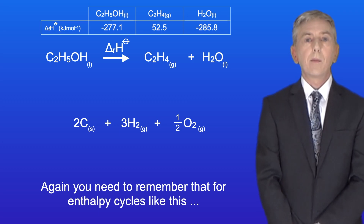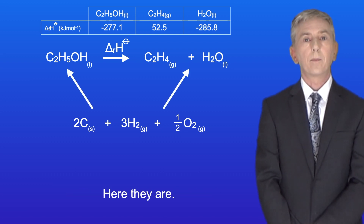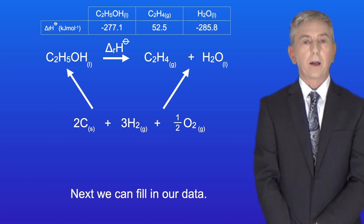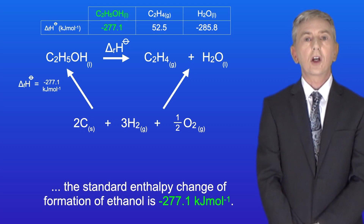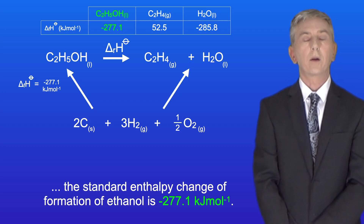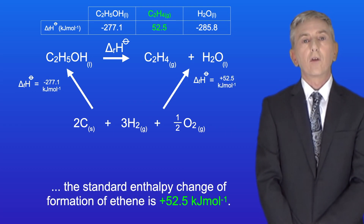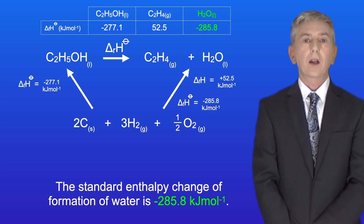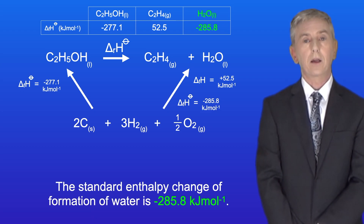Again, you need to remember that for enthalpy cycles like this, when we use standard enthalpy change of formation data, the arrows point upwards, and here they are. Next we can fill in our data. Looking at the left-hand arrow, the standard enthalpy change of formation of ethanol is minus 277.1 kJ per mole. Looking at the right-hand arrow, the standard enthalpy change of formation of ethene is plus 52.5 kJ per mole, and the standard enthalpy change of formation of water is minus 285.8 kJ per mole.